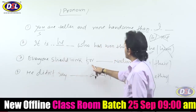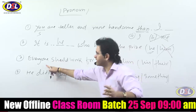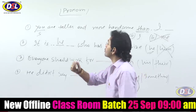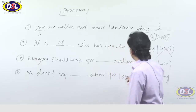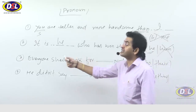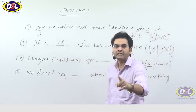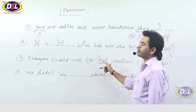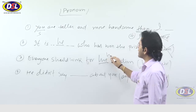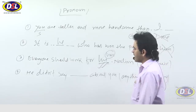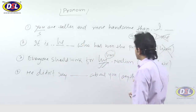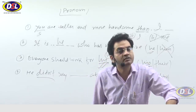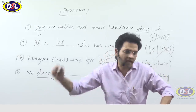Everyone should work for his nation. Note: everyone, everybody, someone, somebody, no one, nobody, anyone, anybody — all refer to a person, so use 'his' or 'her' with them, never 'their.' The most common choice is 'his.' Also remember: for negative sentences use 'any/anything,' and for positive sentences use 'some/something.' He didn't say anything about you — use 'anything,' not 'something,' in negative context.